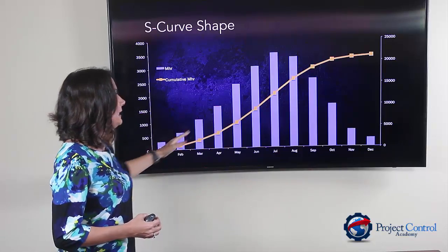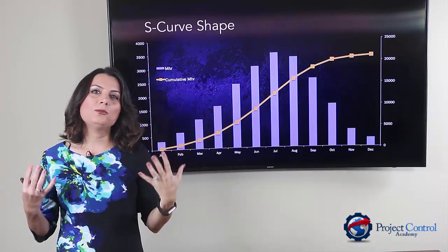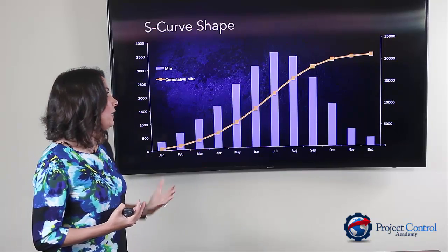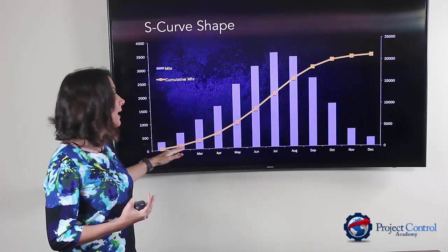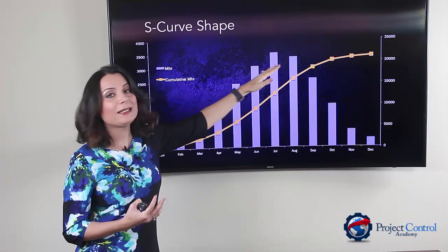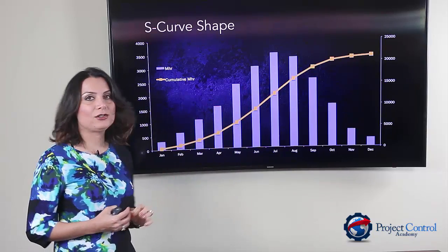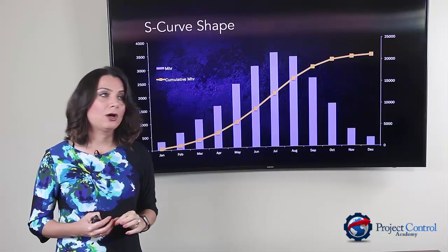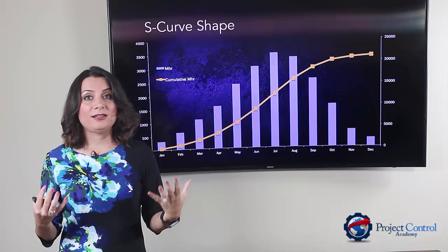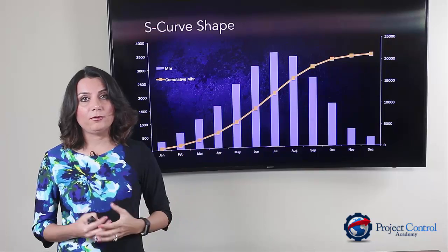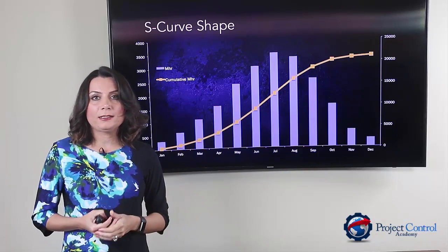So you will see that as a typical shape in most projects. If I convert this to a cumulative curve, that would be something like the S-curve you see here on the orange bar. That's why it creates an S-shape based on the essence of projects.